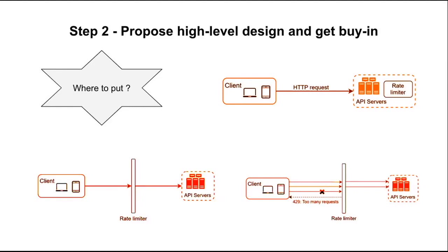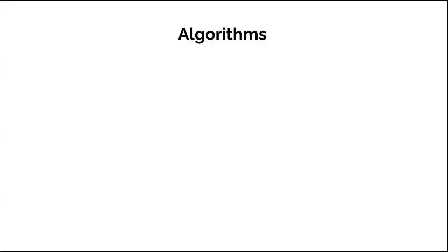Building your own rate limiting service takes time, so if you don't have sufficient engineering resources, going with a commercial API gateway is a better option. Now there are certain algorithms which we can use to implement rate limiting. We'll see those in the next part.